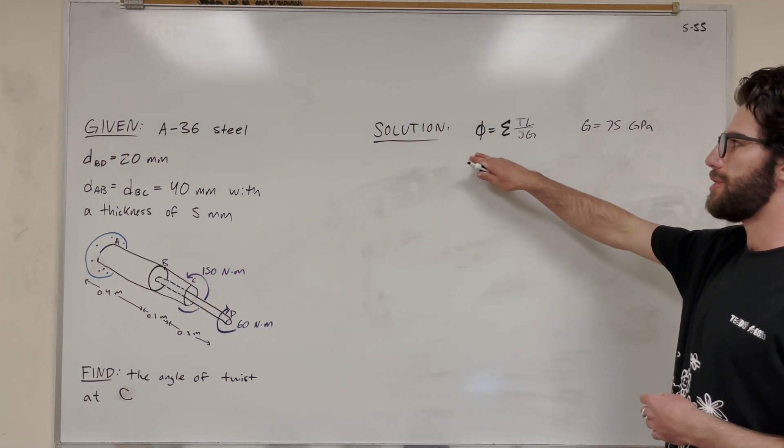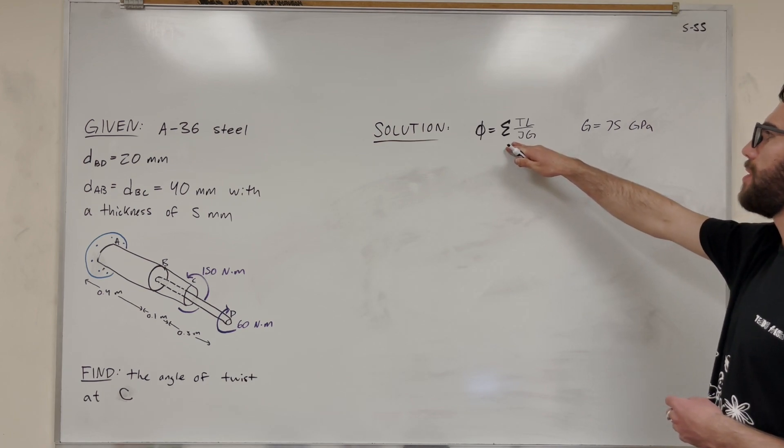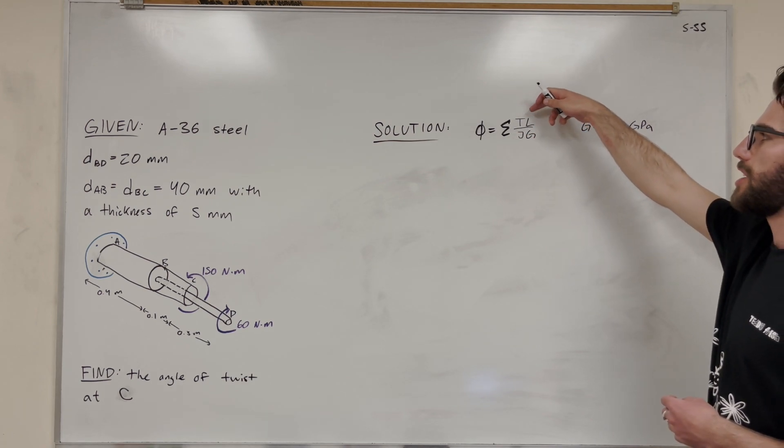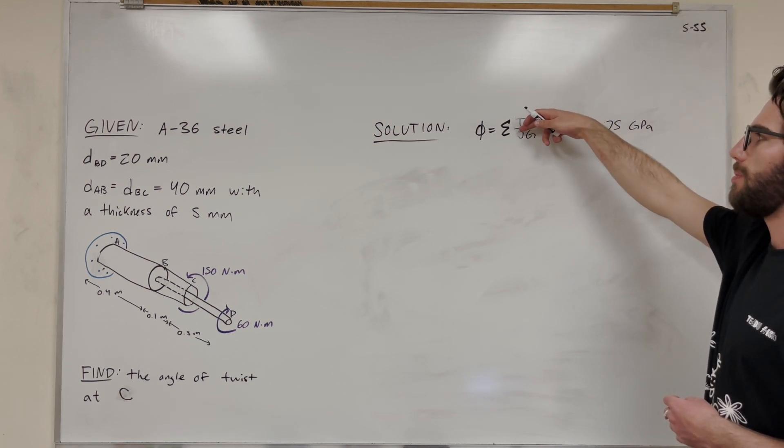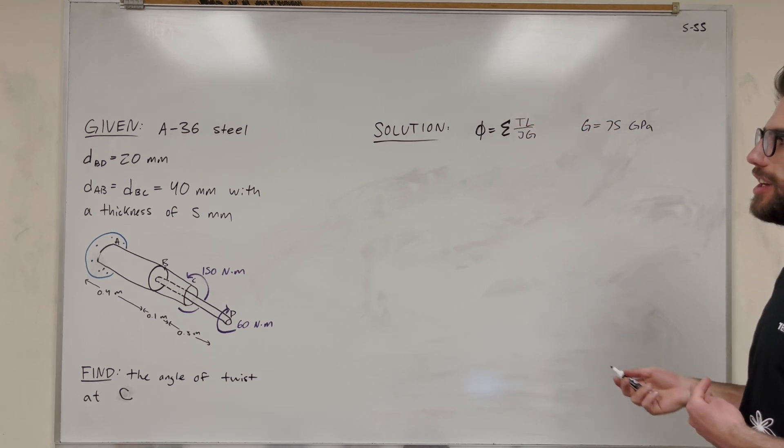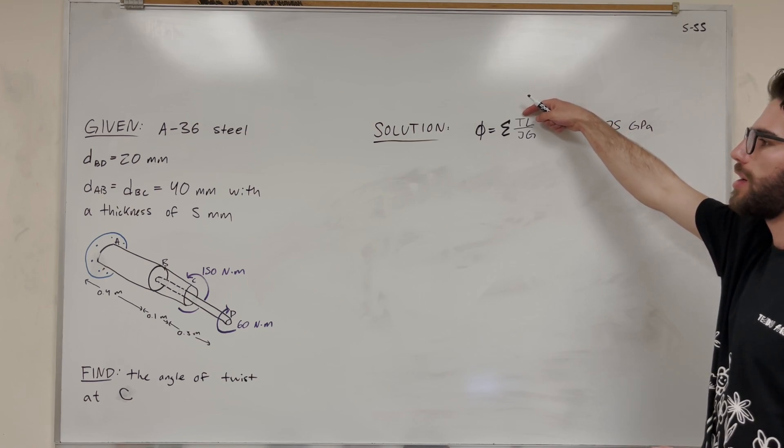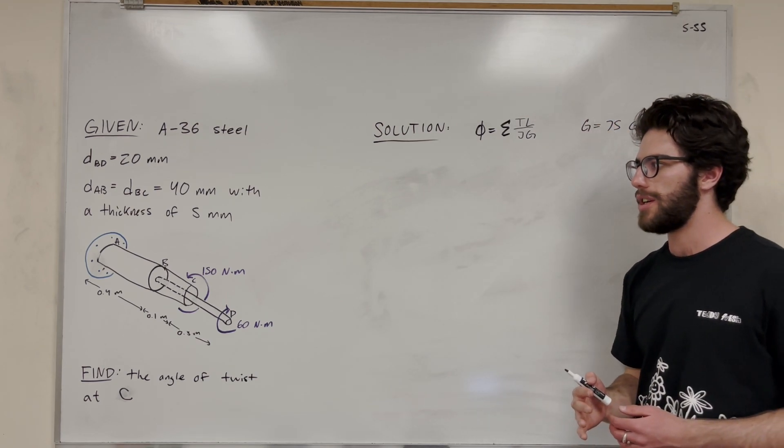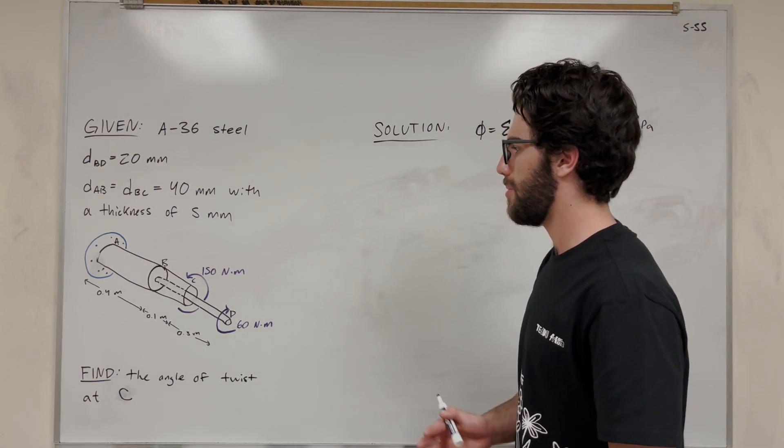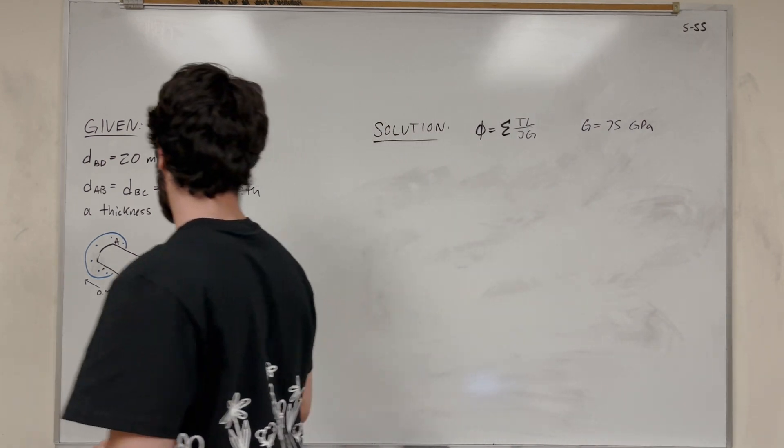To do that, we're going to use the angle of twist formula. We're going to sum up TL over JG, torque times length over polar moment of inertia times modulus of rigidity. So what do we need to find? Let's start with the first thing here, torque. We need to find the torque in each section, and what sections are going to be adding to this.